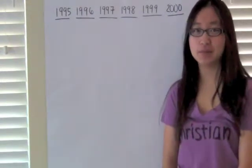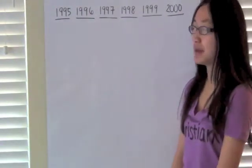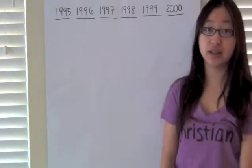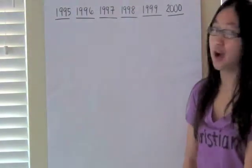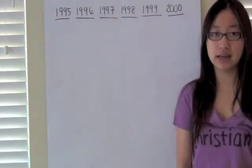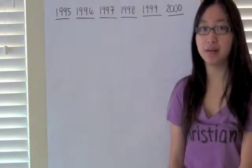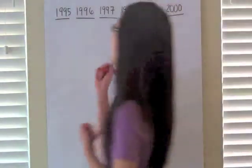In this last pigeonhole problem, you're asked to find how many people you need in a room to make sure that at least three people share the same birth year. So again, you have to think of the worst case scenario, and the worst case scenario in this case would be if everybody that came at first was born in a different year. For example,